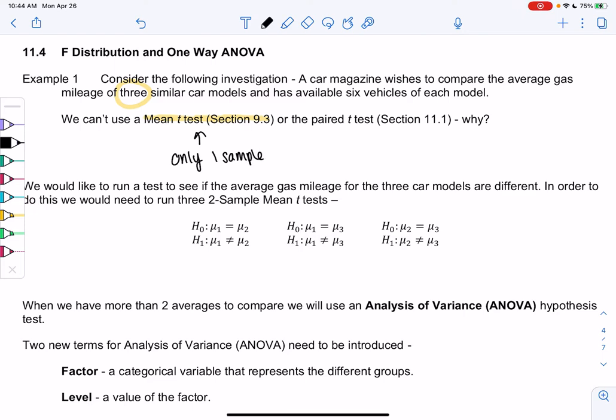We have three different car models, so if we had a single car model, we could use Section 9.3. The paired t-test could maybe be useful for two car models if they were paired in some way, but we have more than two samples also. Three samples and three populations, because each sample goes with a population.